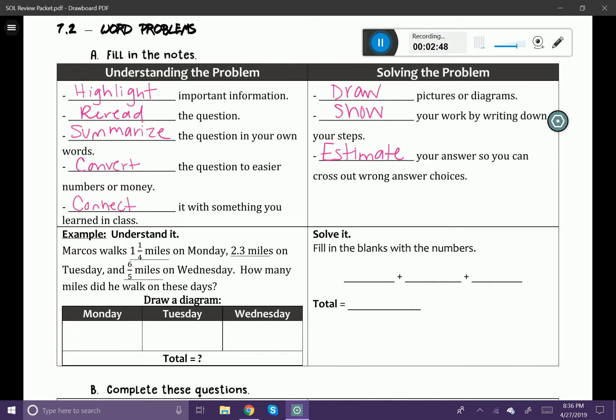Okay, I'm going to sit back and read that again. Marcos walks one and one fourth miles. In my mind, I'm thinking one and one fourth - that's one full mile plus a little bit more. And that's going to be on Monday. Then he's going to walk 2.3 miles on Tuesday. Well, 2.3 is about two and a little bit more. And then six fifths miles on Wednesday. Well, six fifths, that's an improper fraction, so I know that that's more than a whole number.